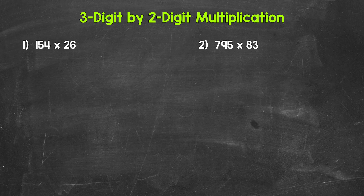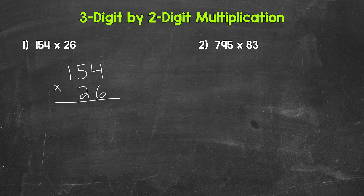Let's jump into number one, where we have 154 times 26. We'll start by setting this up — all we're going to be doing here is lining up the places. So 154 times 26: the ones place is lined up, the four and the six; the tens place is lined up, the five and the two; and then we have a one in the hundreds place. Now that we're set up, we're going to multiply. Really what we're doing is 154 times six, and then 154 times 20 — I'm saying 20 because that two is in the tens place, so it has a value of 20.